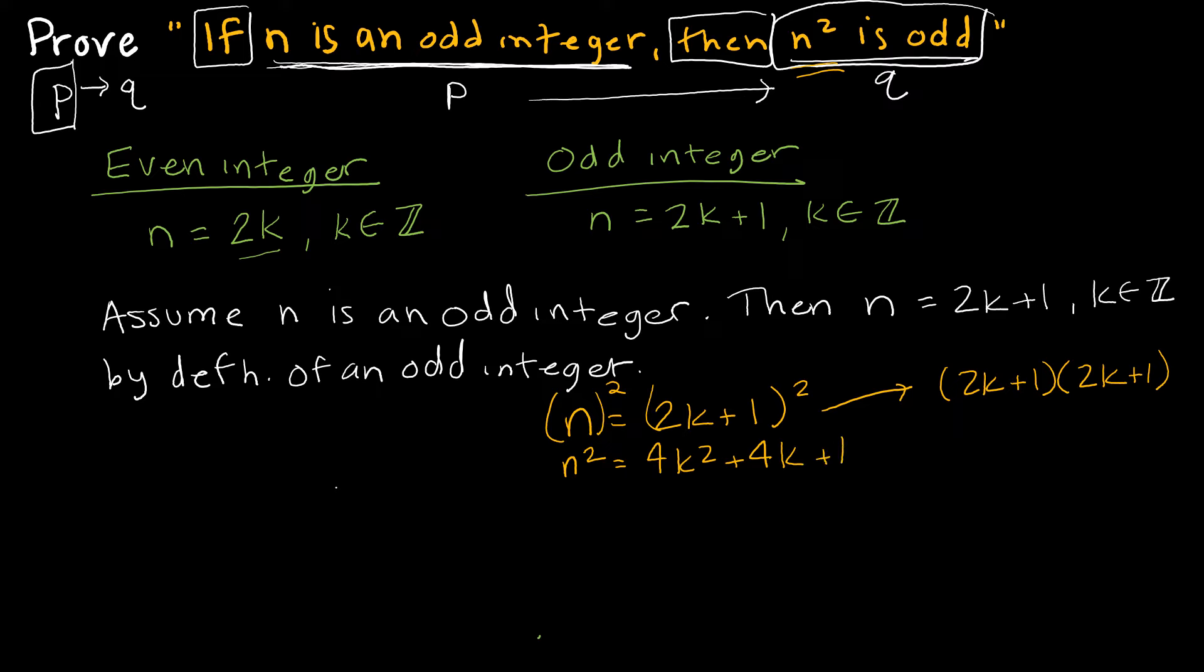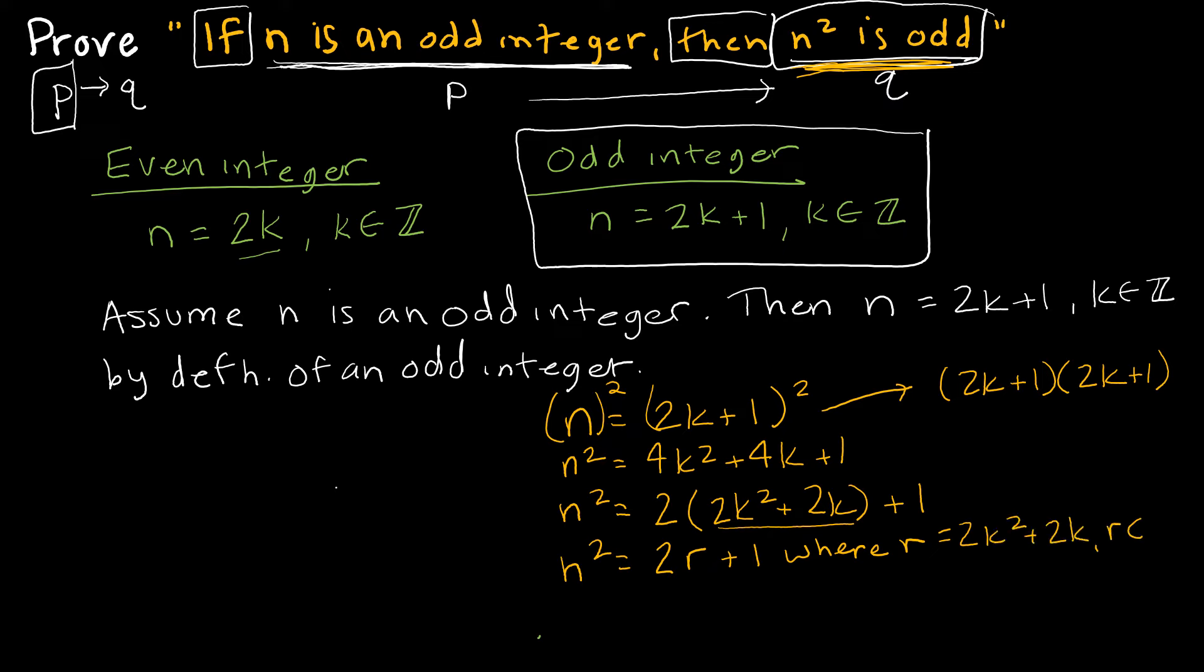And that still doesn't help me, because what I'm trying to get to is to say that n squared is odd. Now, how am I going to show it's odd? Well, lucky for us, we have a definition of what an odd integer looks like. So I'm going to continue by taking a 2 out of my first two terms. 2 times the quantity 2k squared plus 2k plus 1. So from here, I'm feeling pretty good, because this does seem to be in the correct format. But a lot of people don't like that, because there's still kind of a lot going on here. So quite often what you'll see is n squared equals 2r plus 1, where r equals 2k squared plus 2k. And r is an integer.